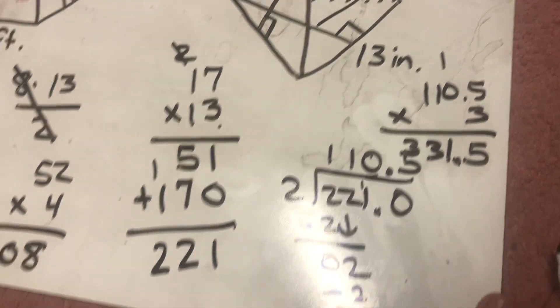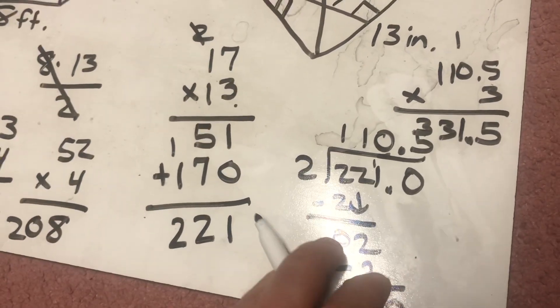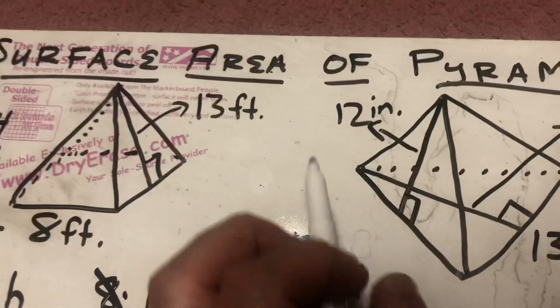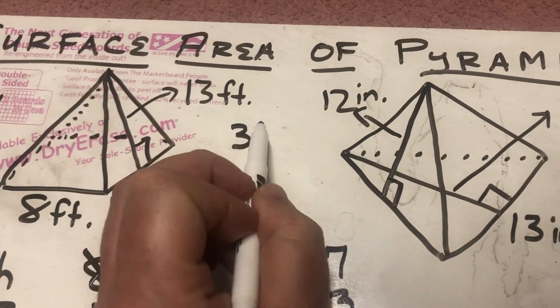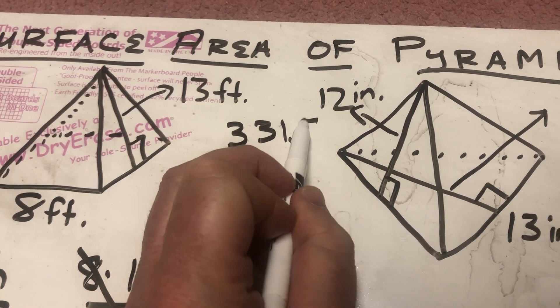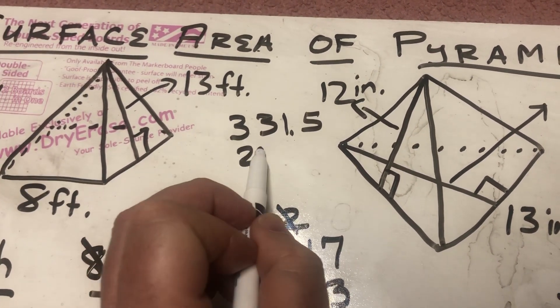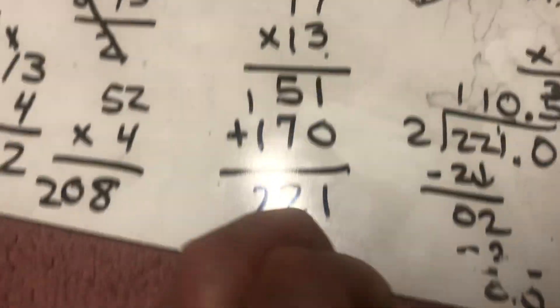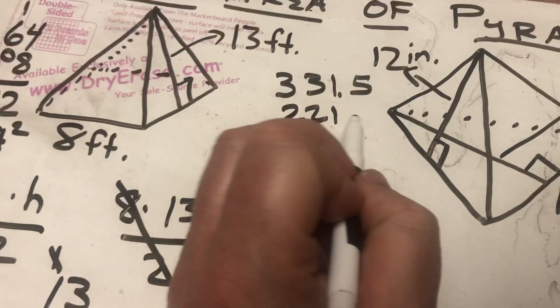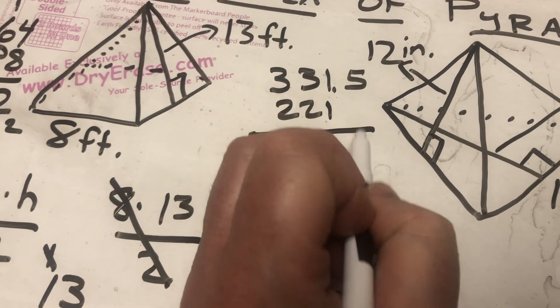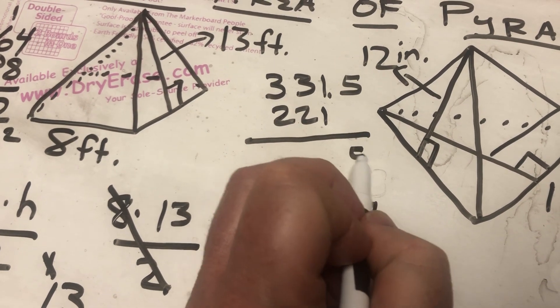That's the 3 faces. Plus the 221 triangular base. So, I'm coming over here. 331.5. 221. I'm going to go ahead and add those together. 5 and nothing is 5. Drop the decimal.